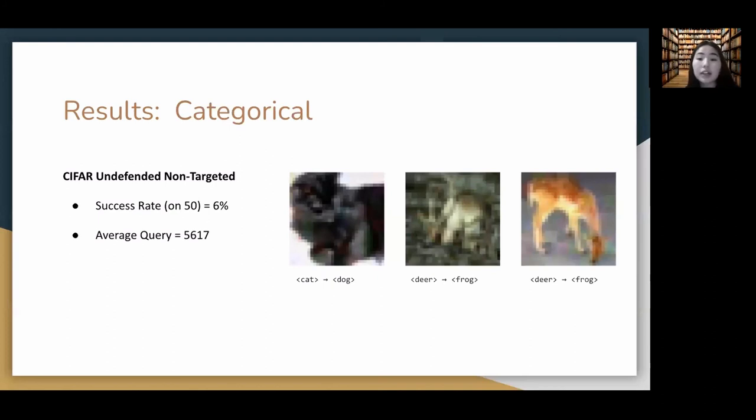Lastly, we tested categorical attacks only with a CIFAR undefended non-targeted dataset, which attacked successfully three images out of 150 that you can see in the slides.